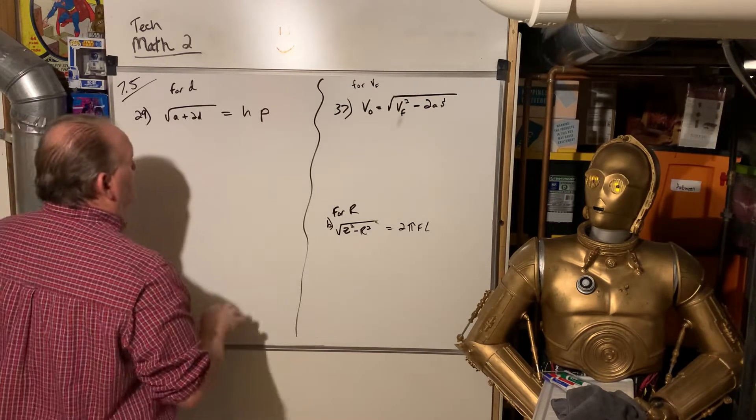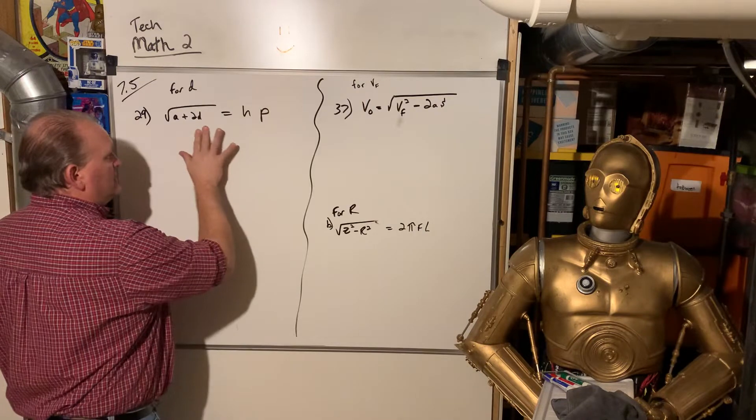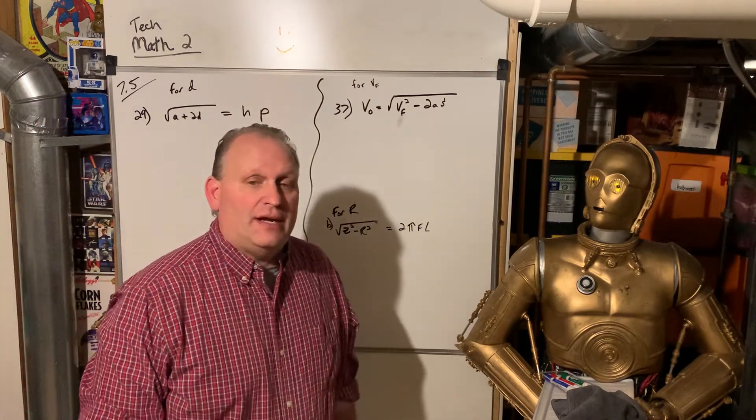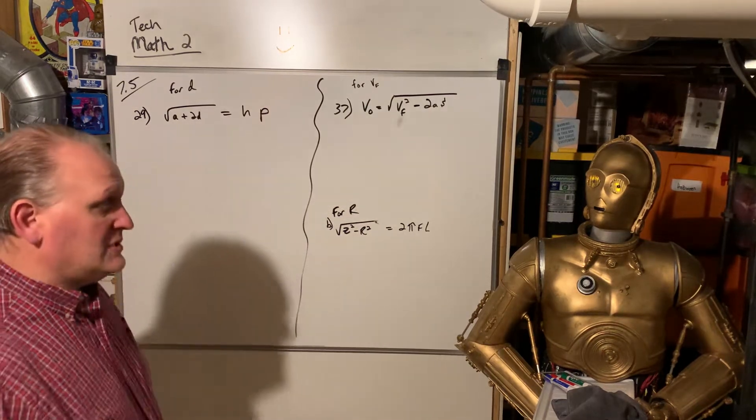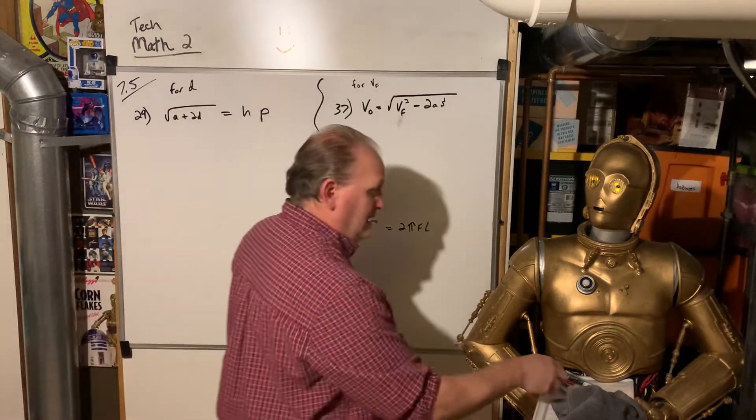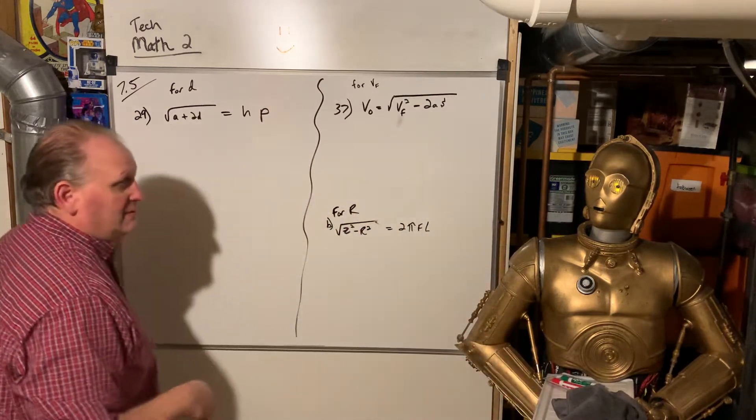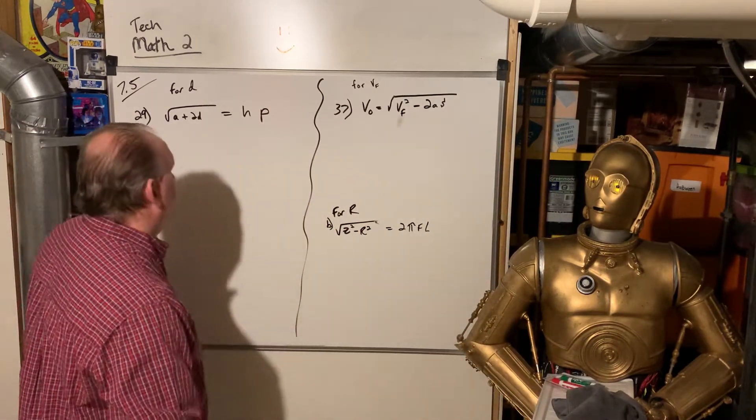They're giving us equations that have square roots, radicals in them, and multiple variables. Now they want us to solve these equations. This is really heavy in algebra. You're going to have to isolate variables and divide by the numbers in front.